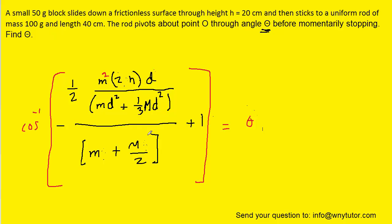We're now ready to plug in the known values. Little m is the mass of the small block, capital M is the mass of the rod. The little h height is 20 centimeters, which we convert to 0.2 meters, and the length d is 0.40 meters. Convert the masses into kilograms as well. When you compute that, you should get approximately 32 degrees, which is the final answer.